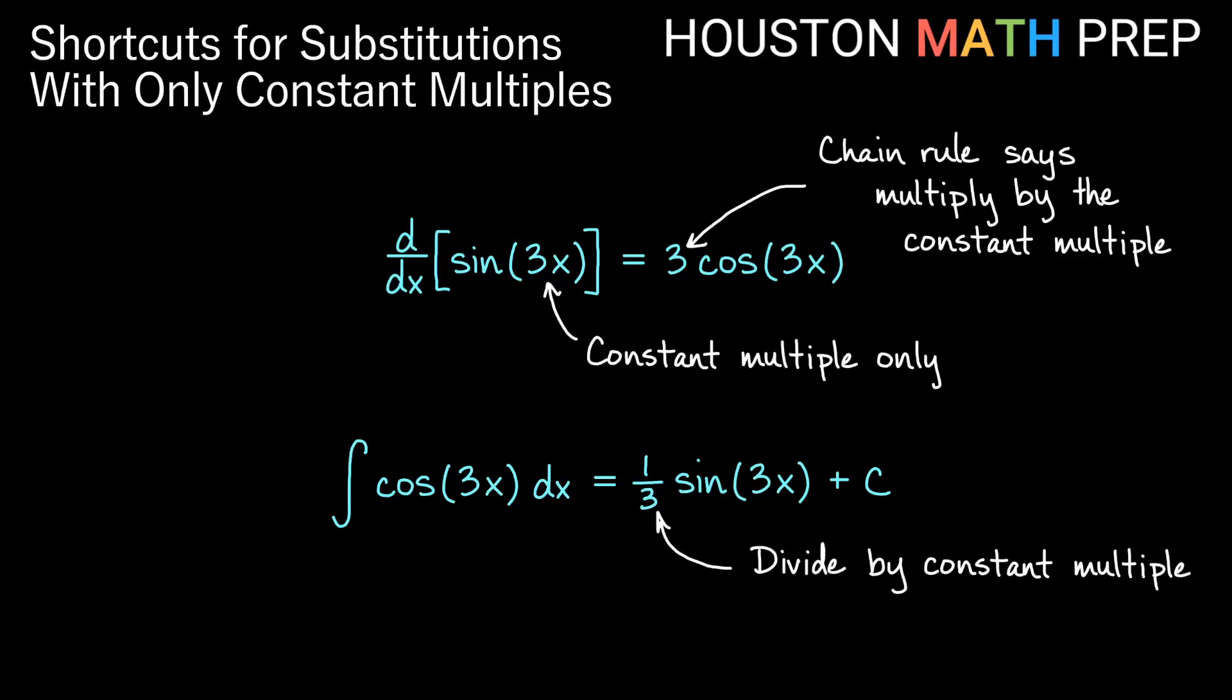So a couple of things: this is just for a constant multiple of x inside of a function. If this was a 3x squared in here or a 3x to the 4, we wouldn't be able to do those things with the constant multiple of 3 because it would involve something more complicated than just that constant multiple.